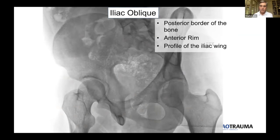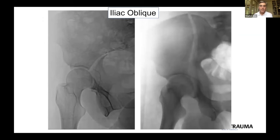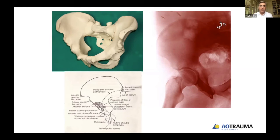The iliac oblique view is the other view we typically get. It's important to look at the posterior border of the bone — it shows us the anterior rim of the acetabulum and gives us a nice profile of the iliac wing. It gives us a chance to see where fractures exit out through the posterior border of the bone so we can map these out and understand where they'll be on a pelvic model. It gives a nice view of the iliac wing where we can see fracture lines that traverse it. I'd encourage you to sit down with a pelvic model and diagrams from Letournel's book and start mapping out where all these points are.